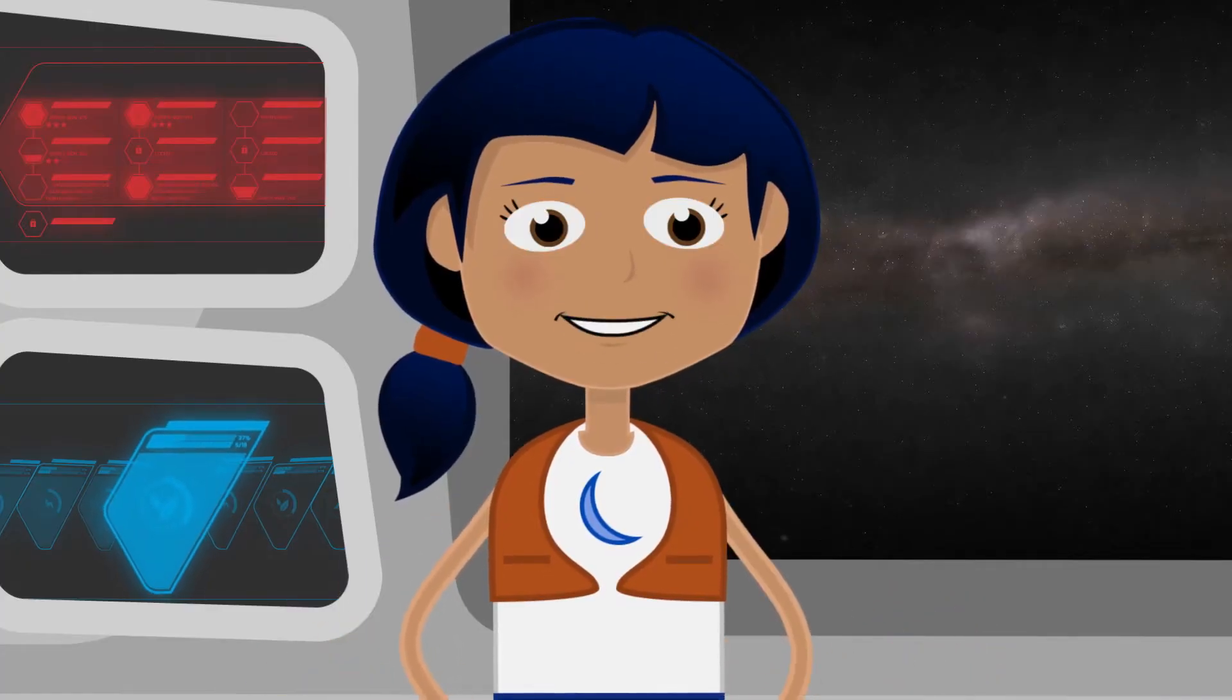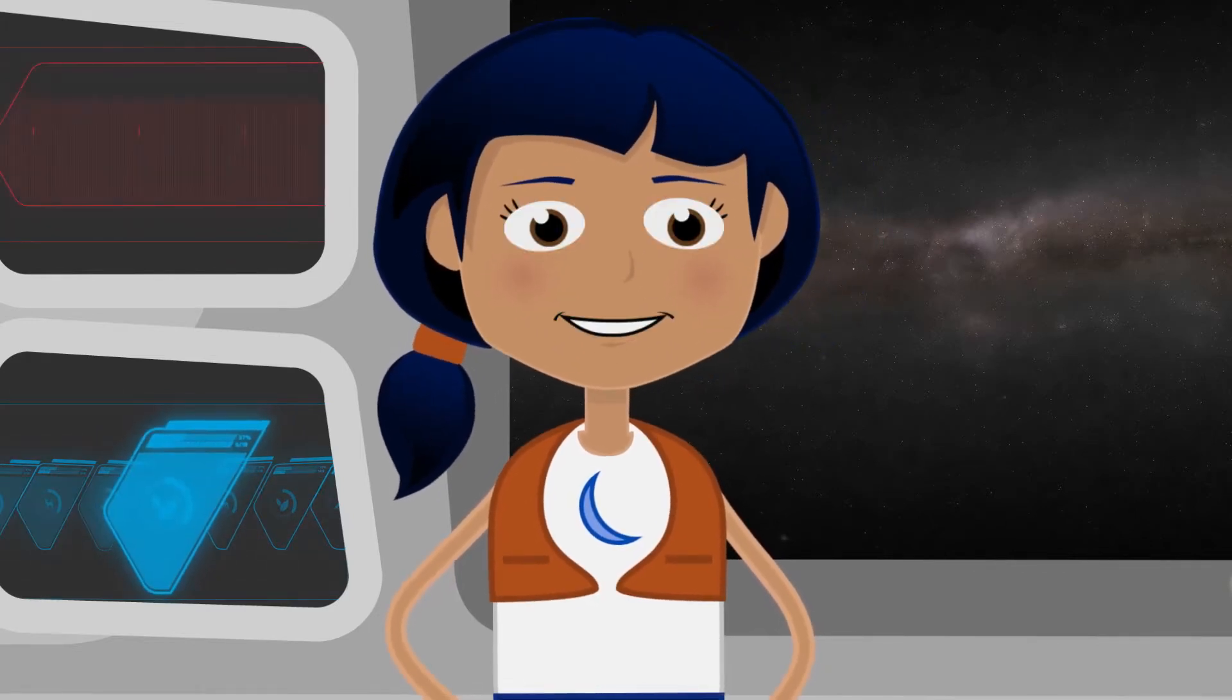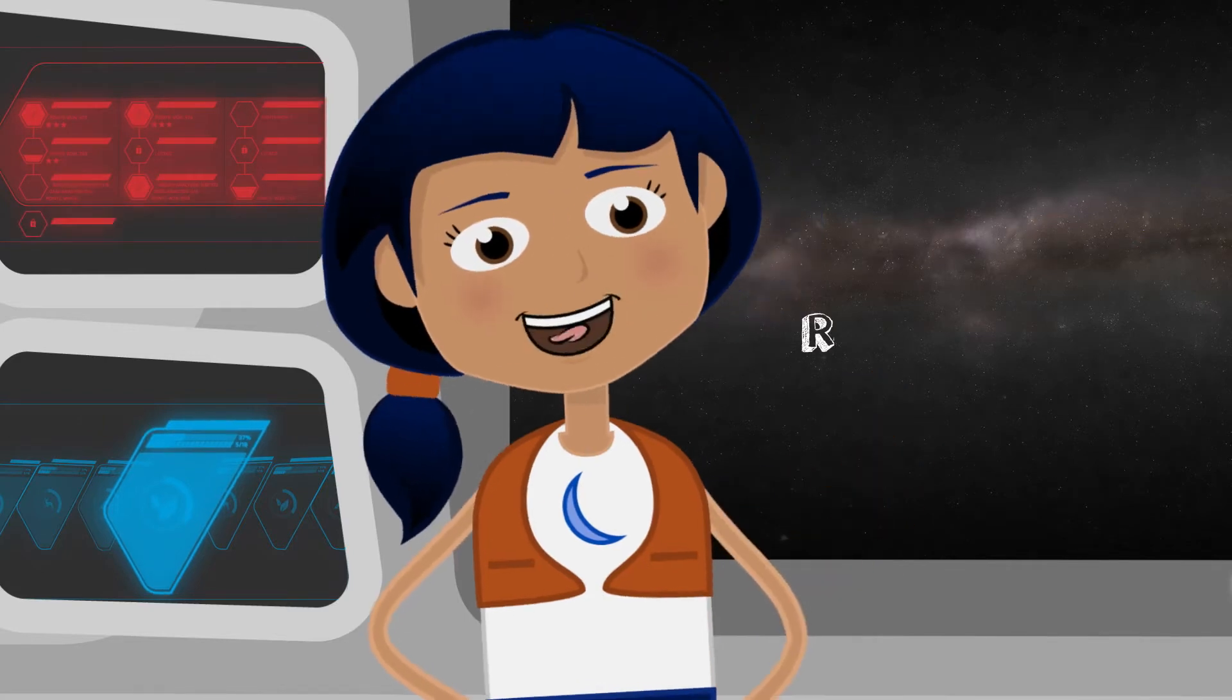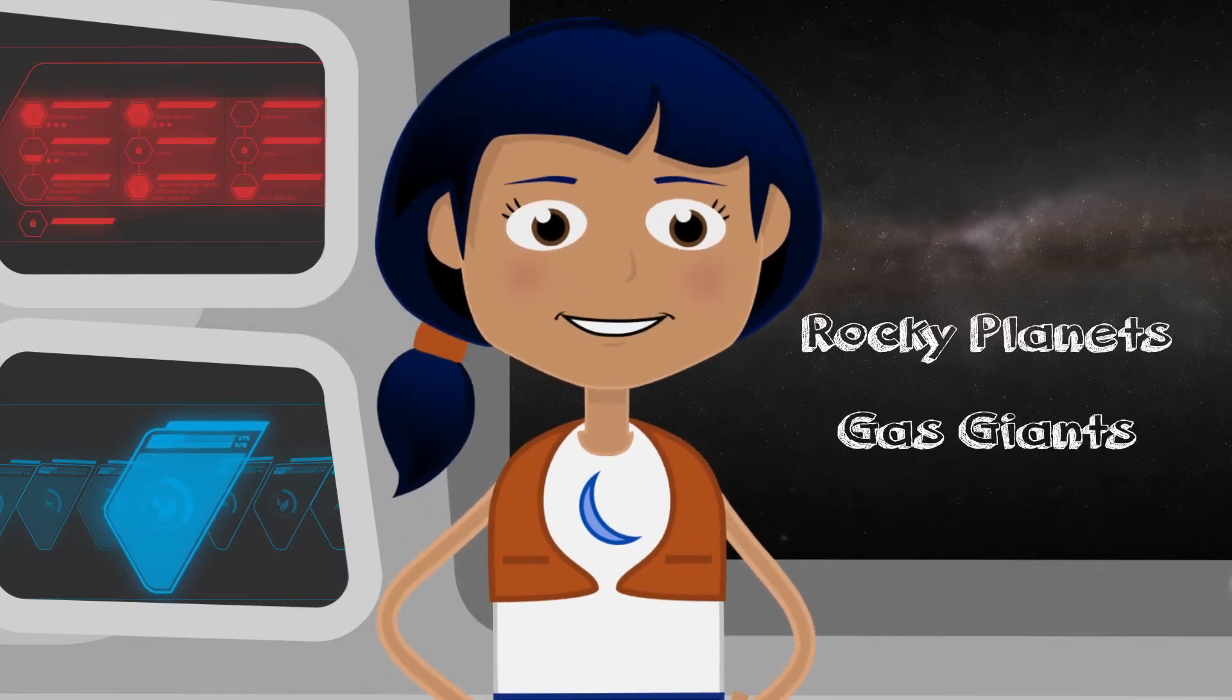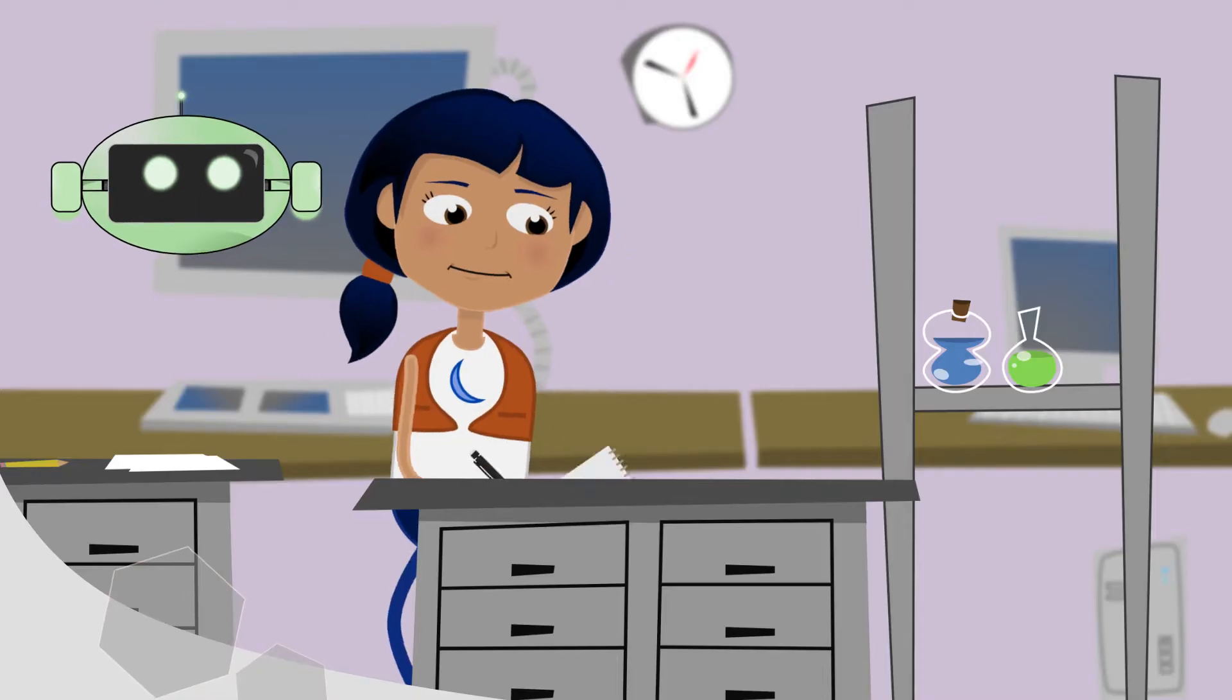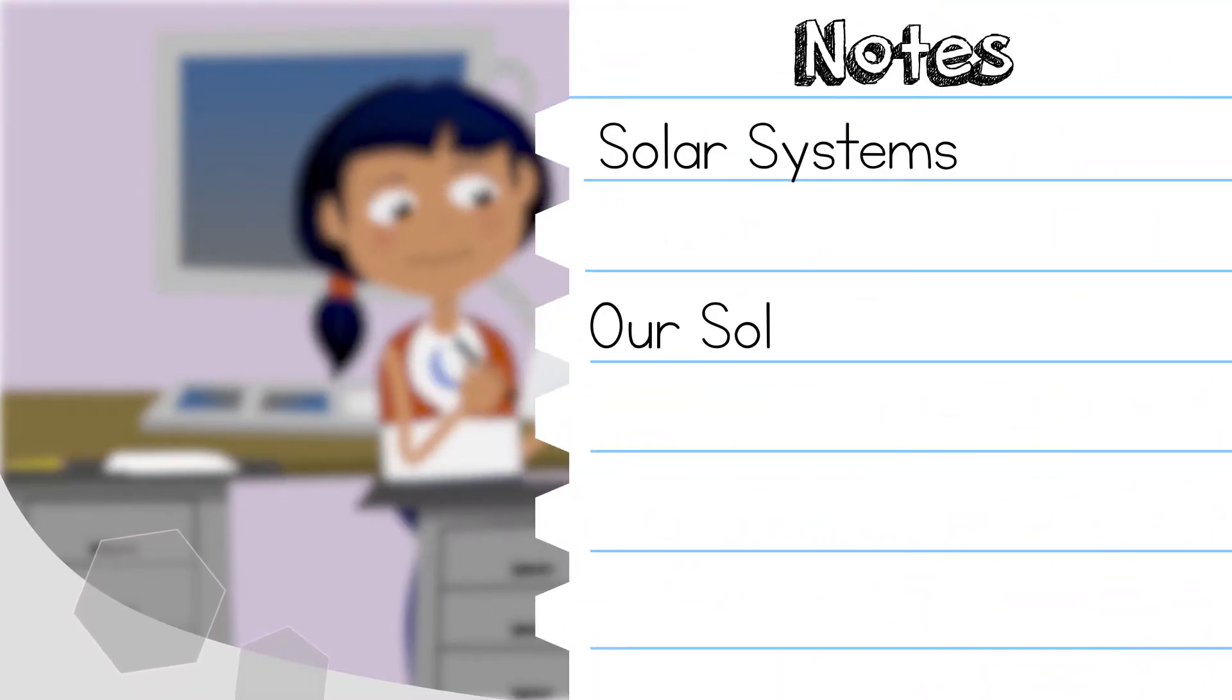Beyond these three similar characteristics, some of these planets look very different from each other. We typically break the eight planets into two categories. Rocky planets and gas giants. We'll talk more about each of those. But first, let's pause to give our scientists a chance to take notes on solar systems, our solar system, and planets. Press play again when you're ready.